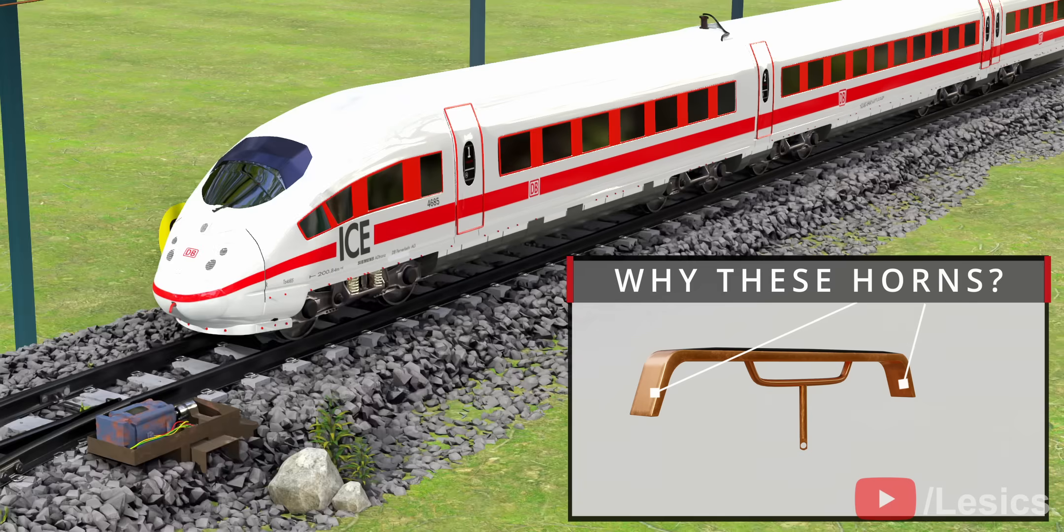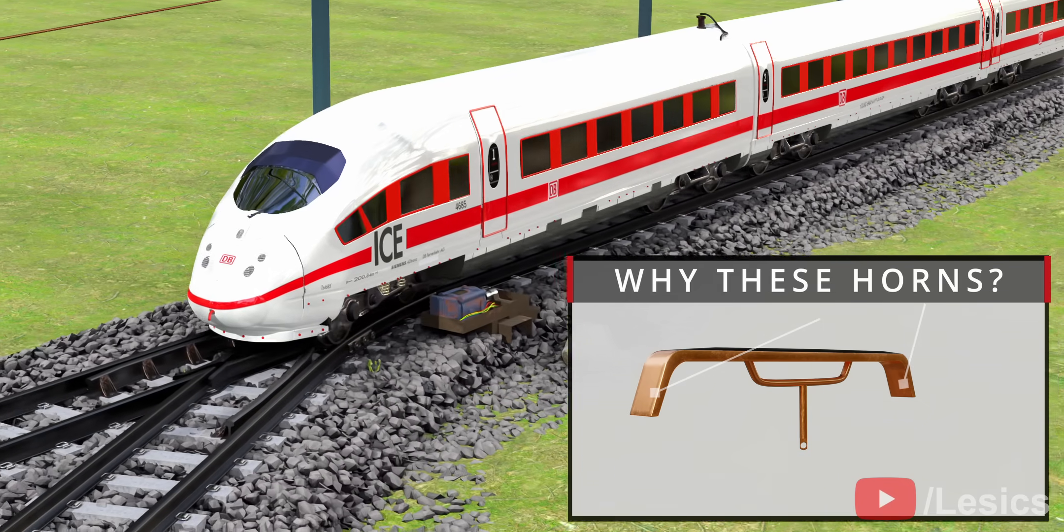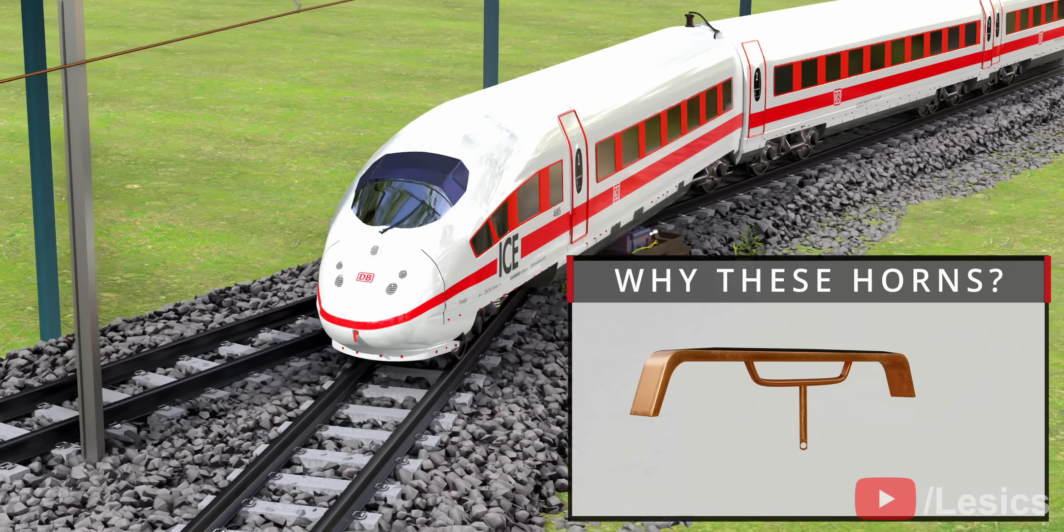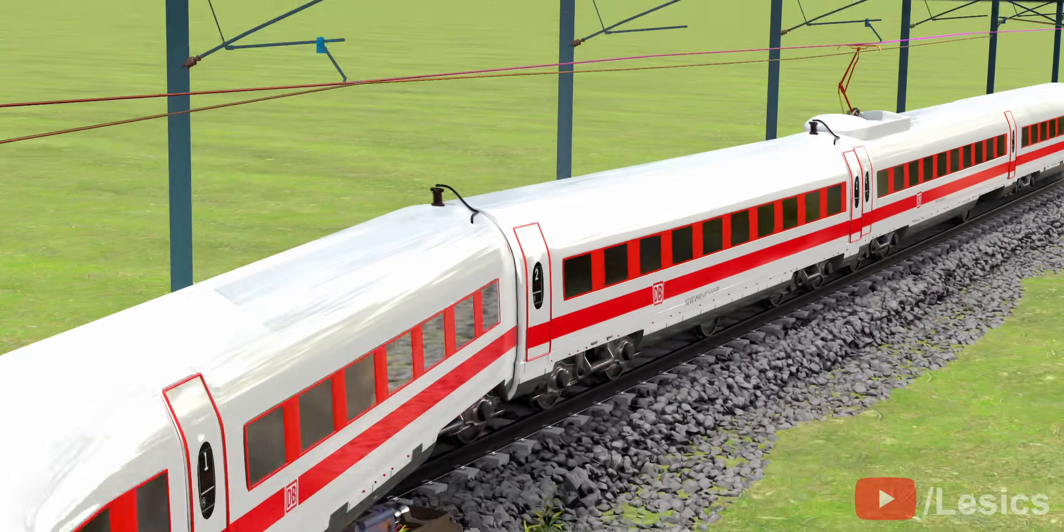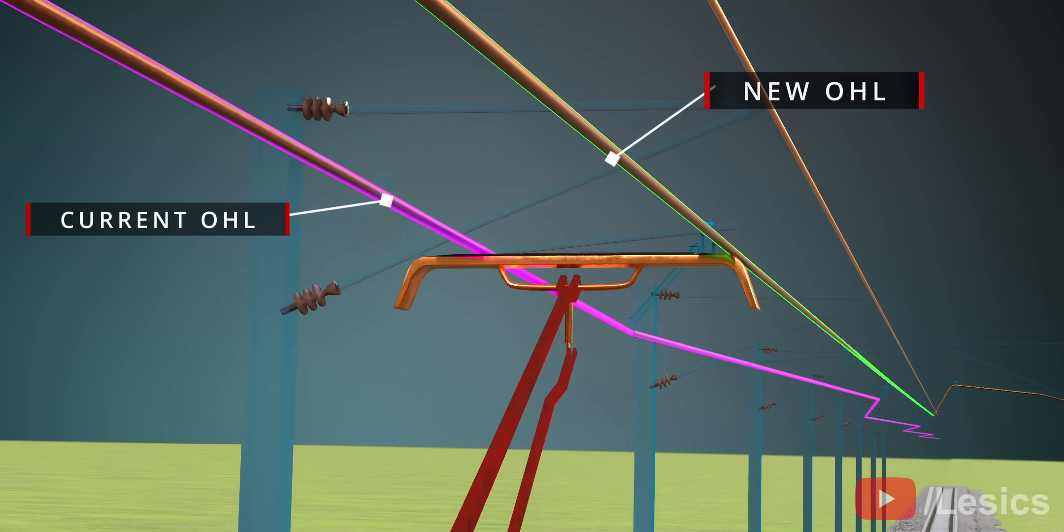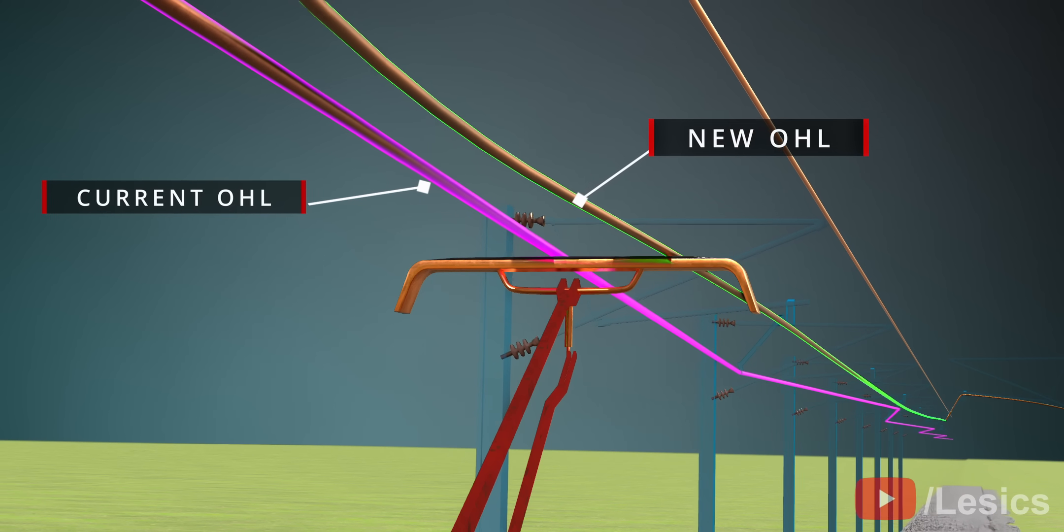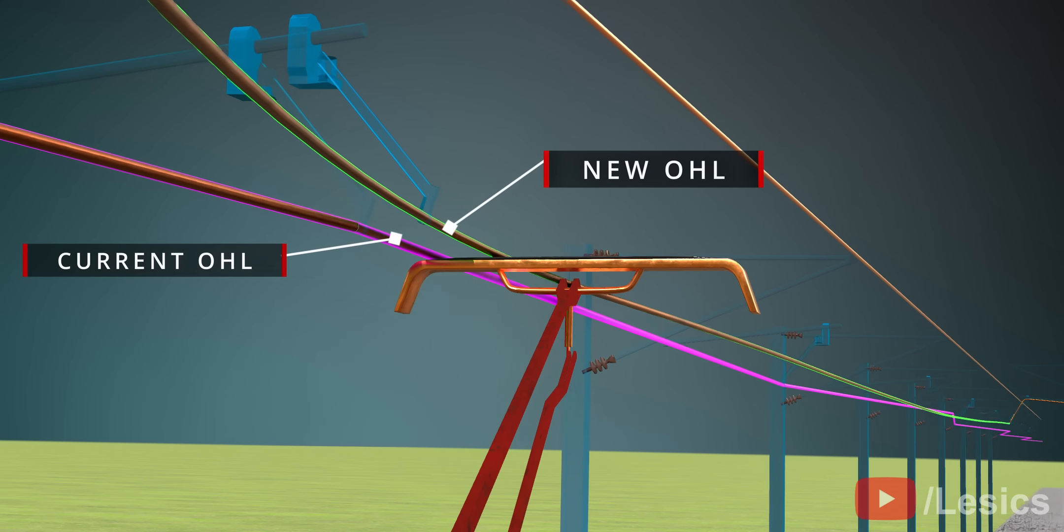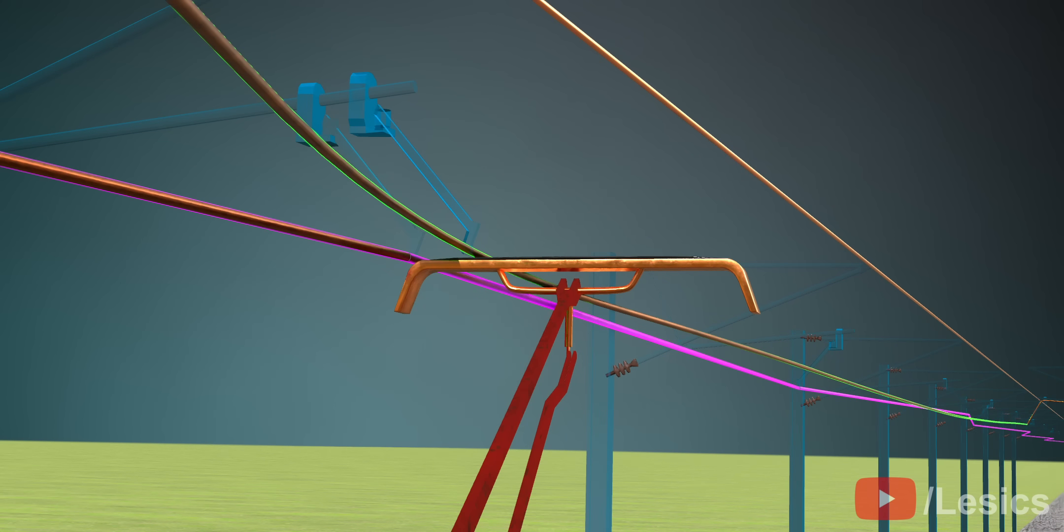The horns are quite useful for when the train switches tracks. During track switching, the pantograph also needs to switch the overhead line. In this animation, you can see how the horns help in the smooth switching between overhead lines. Otherwise, the line could have stuck below the collector head.